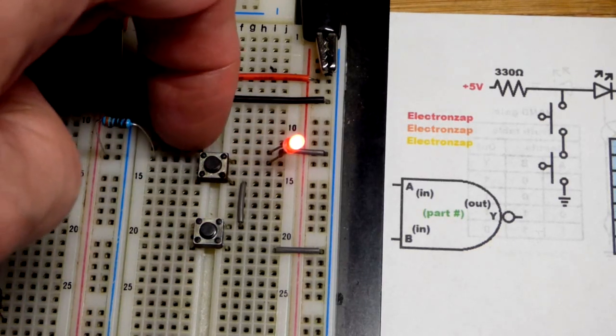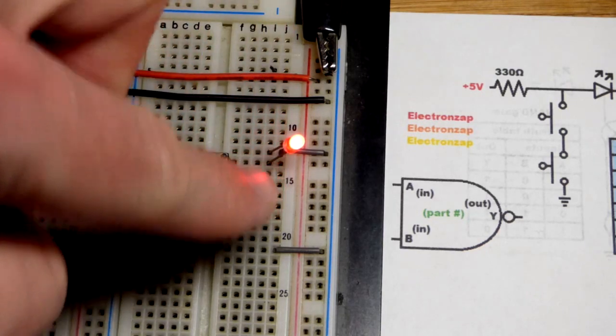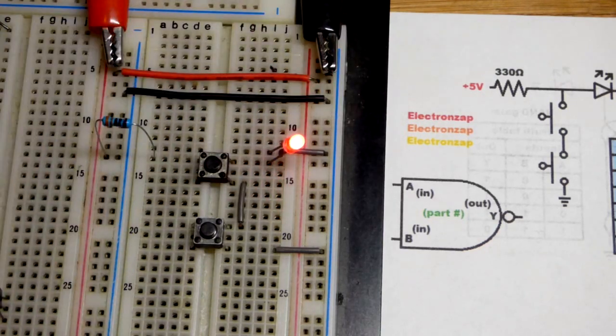You can see how power can go through that 330 ohm resistor. Top of the switch is always connected. Long lead the anode, short lead the cathode going there.